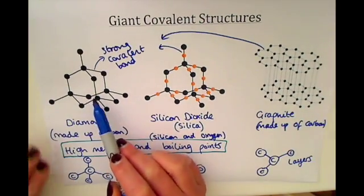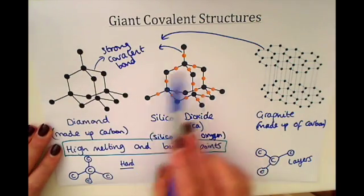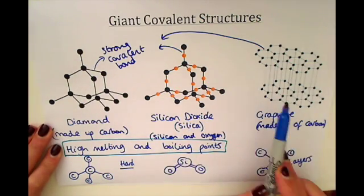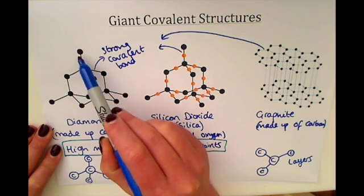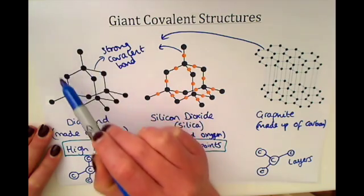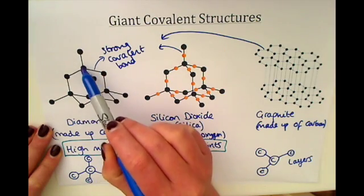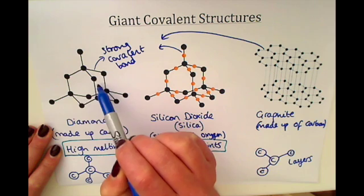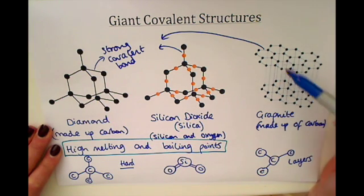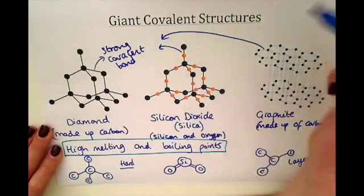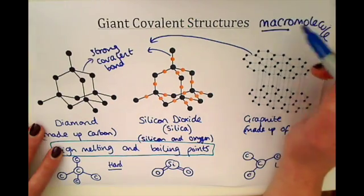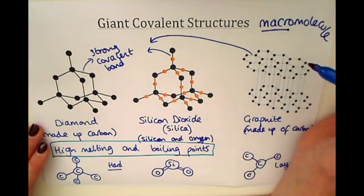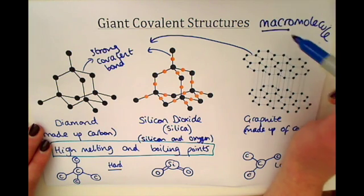So those are the three giant covalent structures you need to know about: diamond, silicon dioxide, and graphite. They all have high melting and boiling points. You need to be able to identify the basic units — diamond has one carbon bonded to four others, while graphite is in layers with one carbon bonded to three. You might also see the term 'macromolecule', which simply means the same as a giant covalent structure — macro meaning a large molecule.